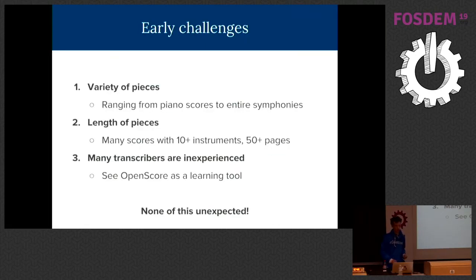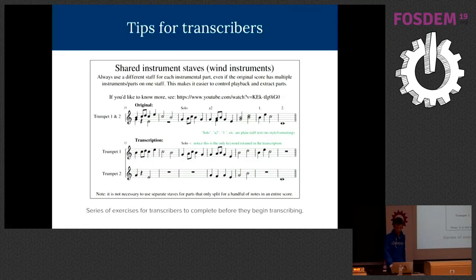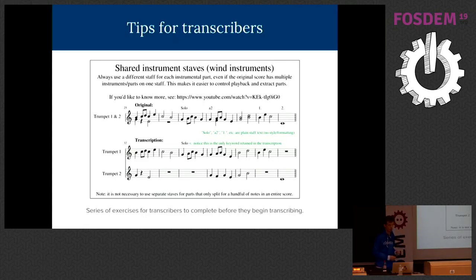Early challenges included the variety of pieces chosen by Kickstarter backers, ranging from piano scores to entire symphonies, with many scores having over 10 instruments or 50-plus pages. Many transcribers were inexperienced and saw OpenScore as a learning tool — they'd do a transcription and we'd give feedback. To help them, I published a set of online exercises they could complete before starting: step-by-step instructions showing if you see this in the original score, here is how to notate it in MuseScore.